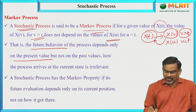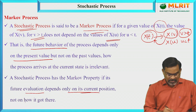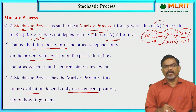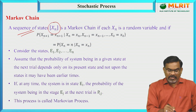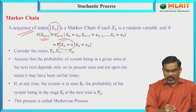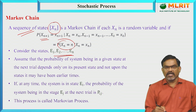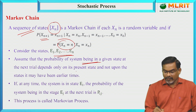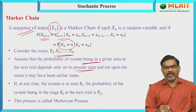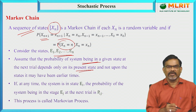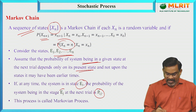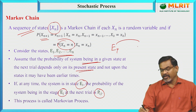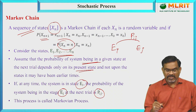A stochastic process has the Markov property if its future evolution depends only on its current position, but not on how it got there — that means it does not depend on the previous values. A Markov chain is a sequence of states x(n) such that the probability of x(n+1) depends only on x(n). Here e1, e2, etc., en are called states. And p_ij denotes the transition probability, where the transition is from state e_i to e_j.